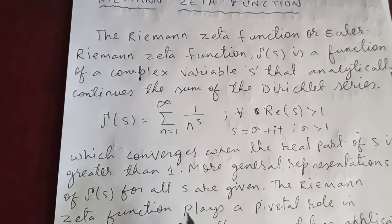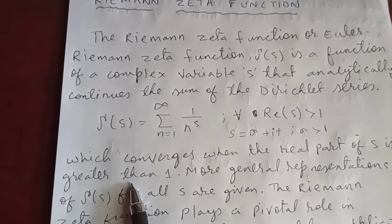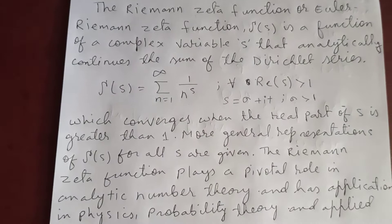The Riemann zeta function will be convergent when the real part of s is greater than 1. More general representations of zeta function for all s are given.